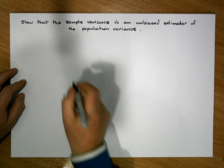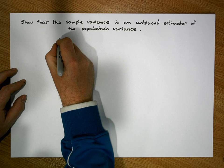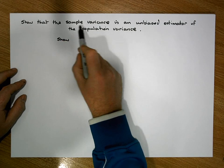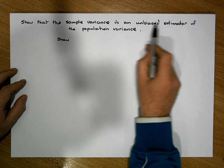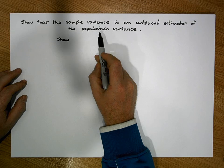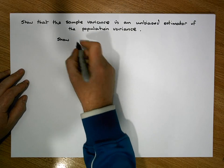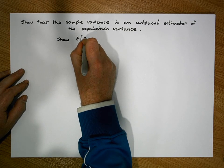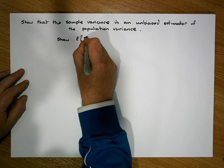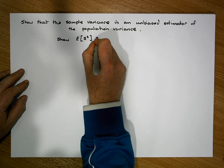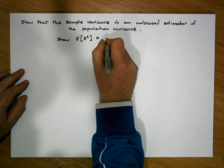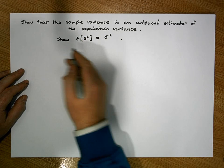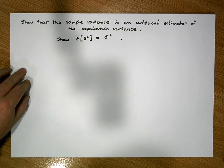So what is it that we'd like to show? We'd like to show that the sample variance is an unbiased estimator of the population variance. In other words, we'd like to show that the expected value of the sample variance, s squared, is equal to the population variance, sigma squared. That's what we'd like to show.